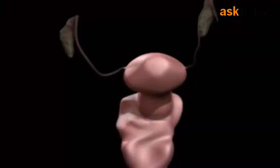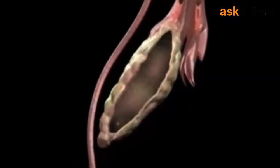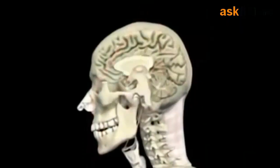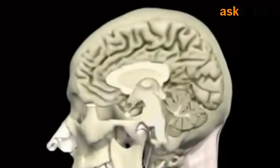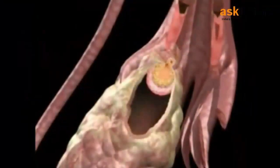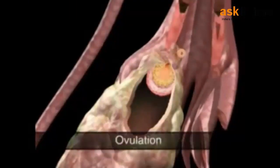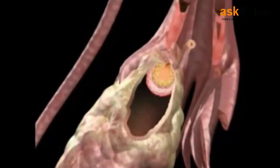The uterus is a hollow, muscular, and inverted pear-shaped structure. If fertilization has taken place, the embryo gets attached to the uterine wall where it is nourished and protected. This process is controlled by hormonal secretions of the pituitary gland into the bloodstream. The ovary releases the matured egg — you can see a matured egg being released here — this is known as ovulation.